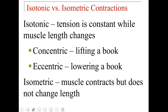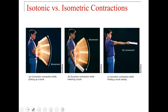Isotonic versus isometric contractions: with isotonic contractions, tension is constant while muscle length changes. Concentric contractions are like lifting a book; eccentric contractions are like lowering the book. Isometric contractions are muscle contractions that don't change the muscle's length — isotonic does change the length, isometric does not. A concentric contraction brings it up, eccentric lowers it, and isometric holds it steady without changing fiber length.